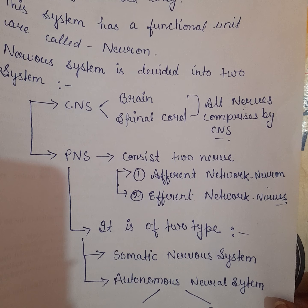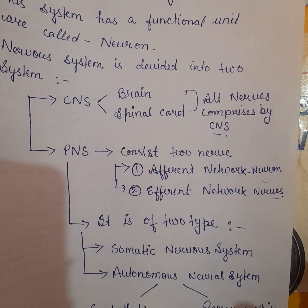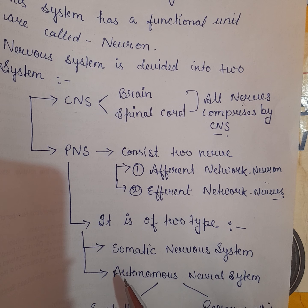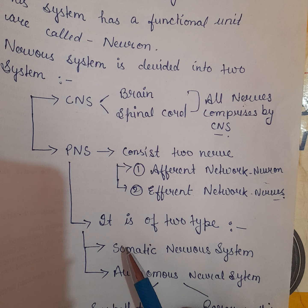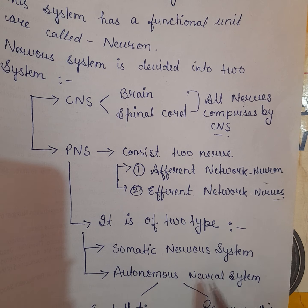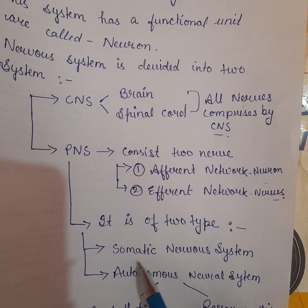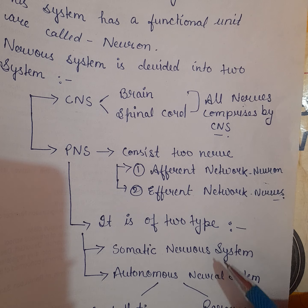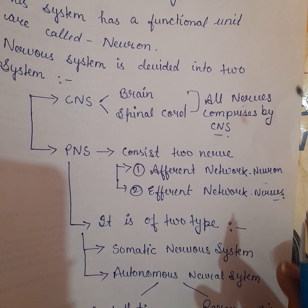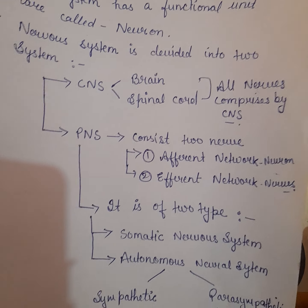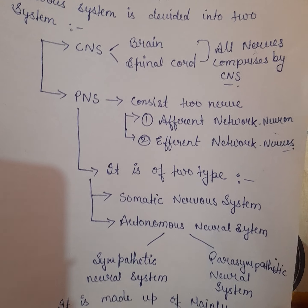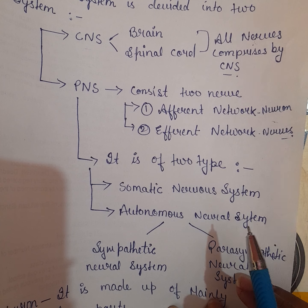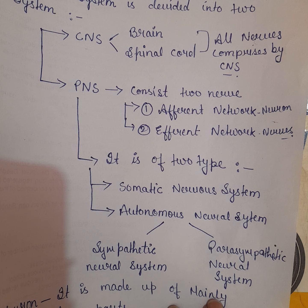PNS bhi apne aap mein do types ka hota hai: somatic nervous system aur autonomic nervous system. There is no difference in calling them autonomous or autonomic nervous system — you can call them in any way, it's just a writing convention.